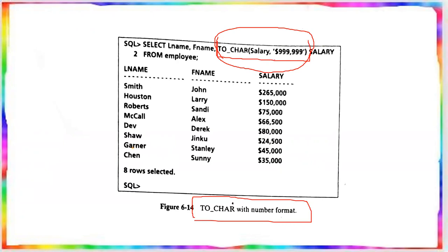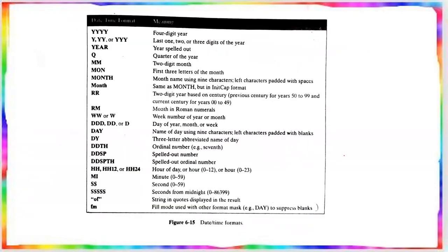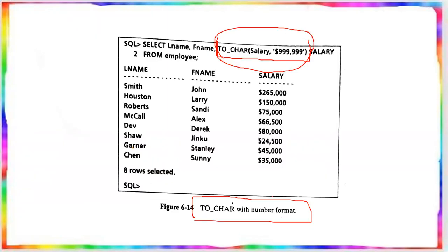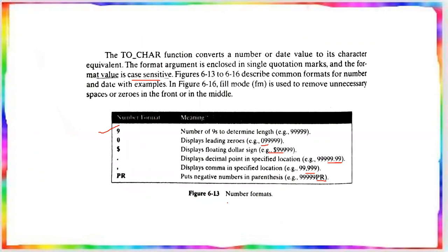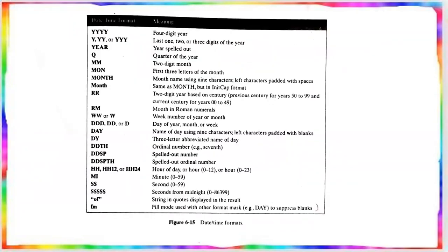Similarly, date-time formats are available. For example, YYYY gives a four-digit year, MM gives a two-digit month, and various other format elements are available. You can go through the date format table on your own as well.